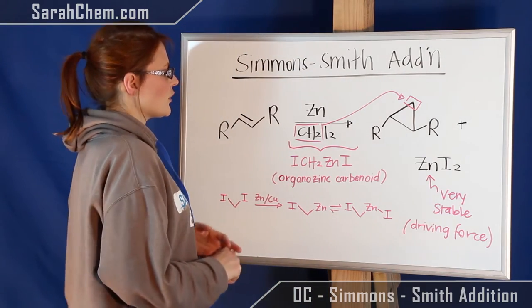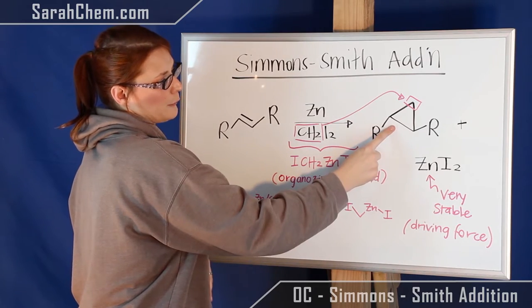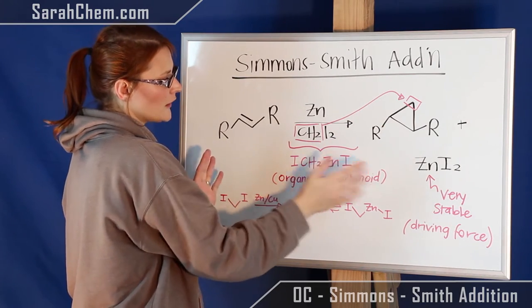So if we take a look at this, what we're going to do is we have an alkene and we're ultimately going to form a product that contains a cyclopropane.